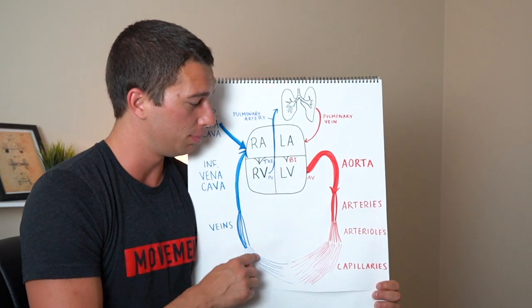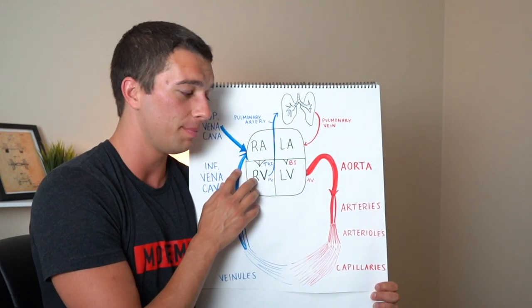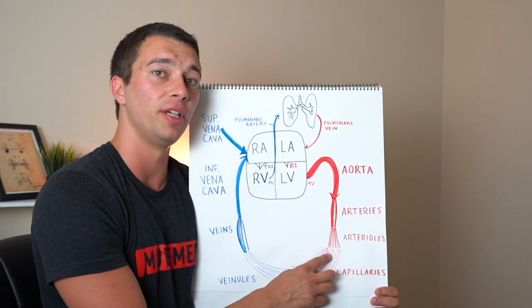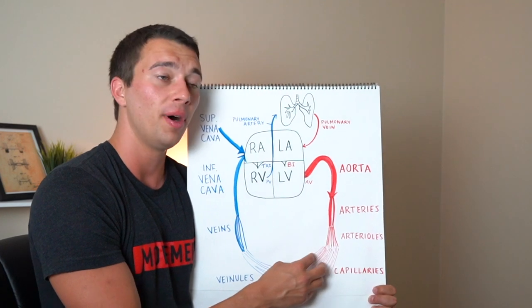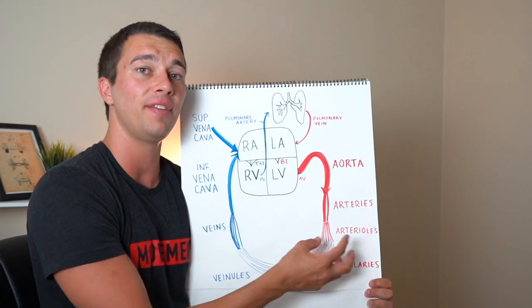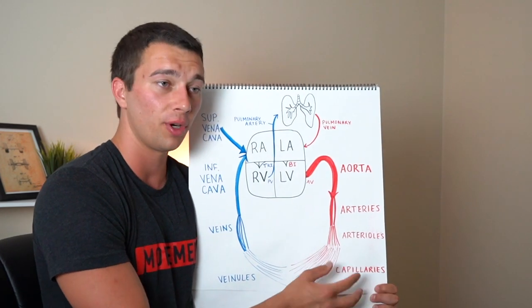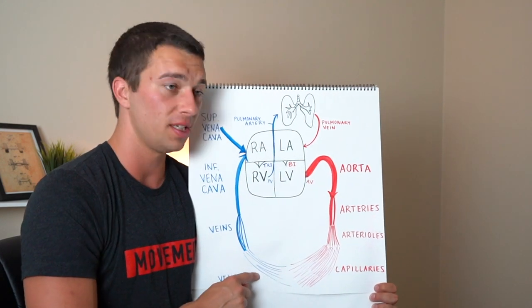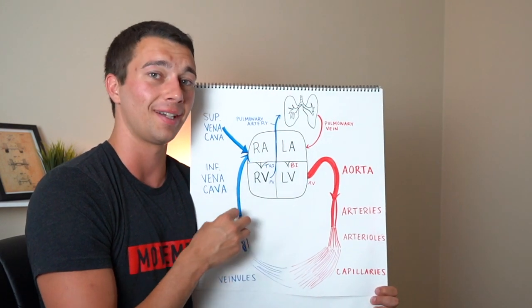And just to clarify all this blue here is deoxygenated blood. The blood was oxygenated over here in the arteries and the arterioles but as it went to the capillaries it gave that oxygen to the muscles, to the organs, and then as it goes to the veins, the venules, it's going to be deoxygenated over here.